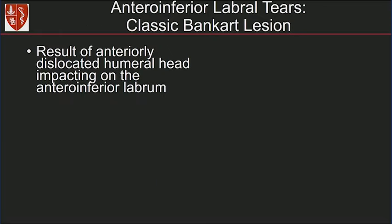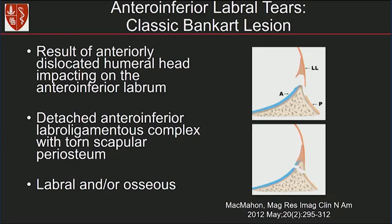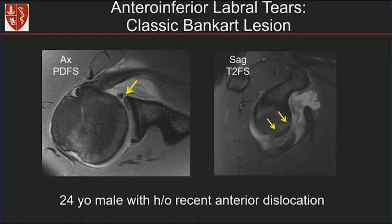The classic Bankart lesion results from an anteriorly dislocated humeral head impacting on the anterior inferior labrum. We see a detached anterior inferior labral-ligamentous complex and the periosteum is torn. It can be purely labral or it can avulse a piece of bone — an osseous Bankart. Here's a patient with history of recent anterior dislocation. On the axial PD fat-suppressed image and sagittal T2 fat-suppressed image, you can see the anterior inferior labrum is detached from the glenoid. The sagittal images are really helpful for these cases.